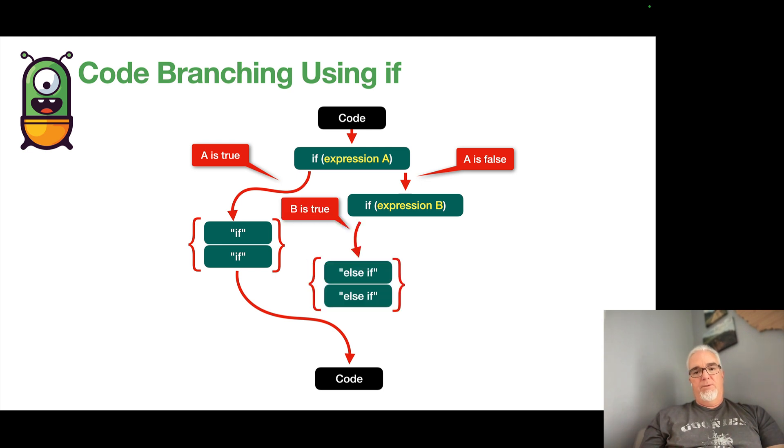And if B is true, then we'd say the else if, because the else if expression is the second one, and we branch back to the code. And if B is false, then we finally say, well, A is false